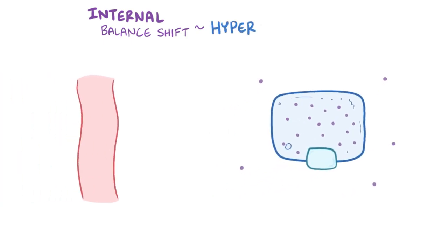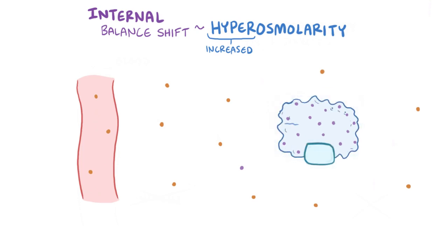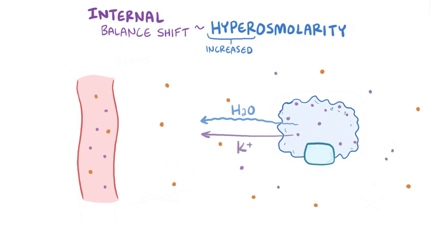Another important mechanism is hyperosmolarity, where there is an increased extracellular osmolarity relative to the intracellular space. This osmotic gradient pulls water out of cells and into the extracellular space. Less water in the cells increases the intracellular potassium concentration, which increases potassium's concentration gradient and pushes more of it out of the cell and into the interstitium and blood.